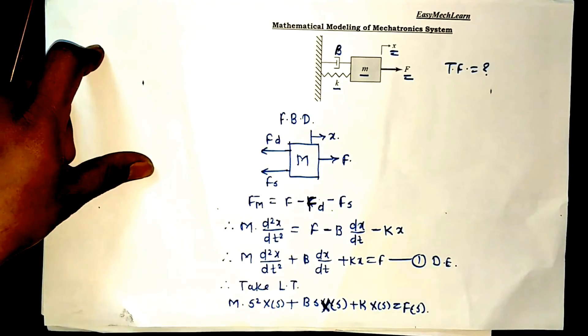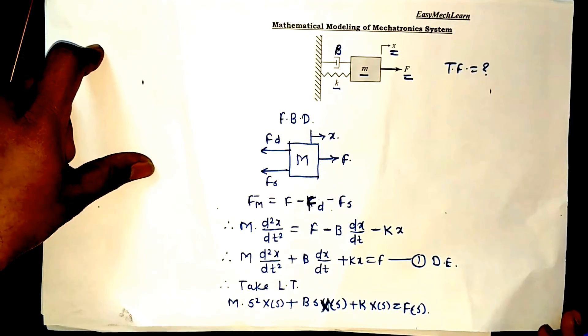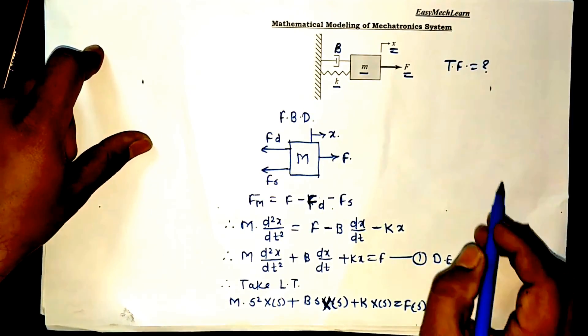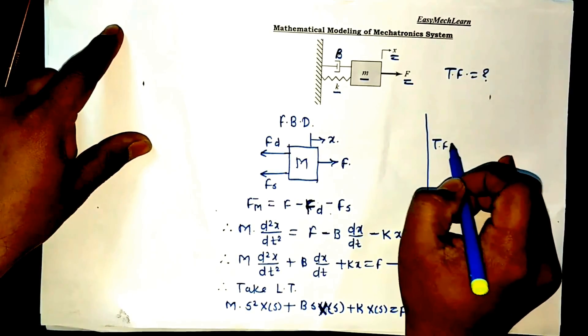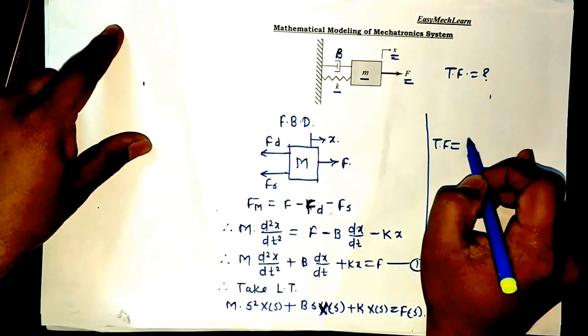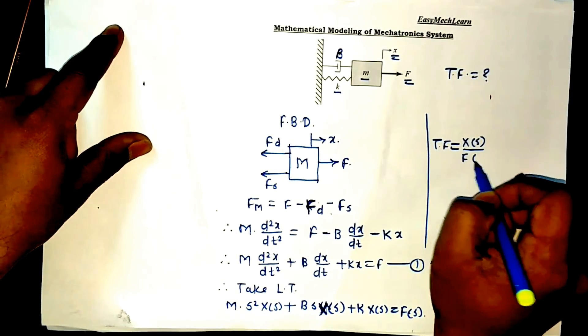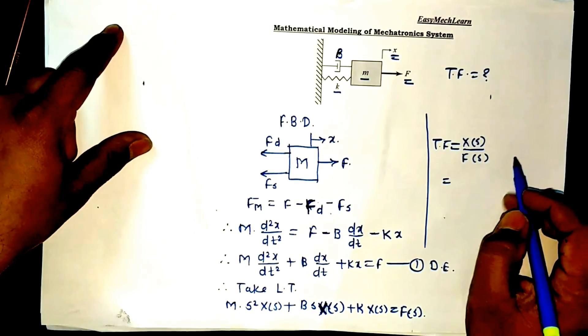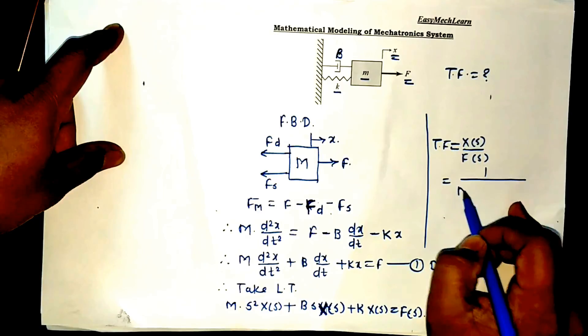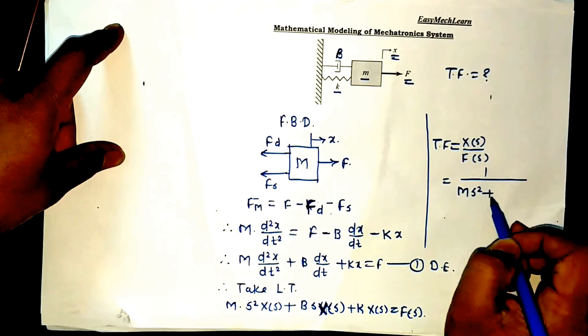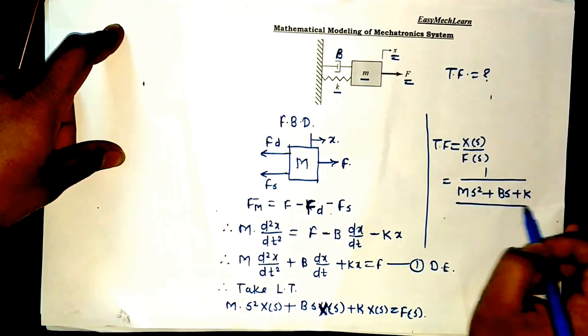Now, if you simplify this equation, this is the transfer function. Transfer function is equal to X of s upon F of s. That is Laplace of output divided by Laplace of input: 1 upon Ms square plus Bs plus K. This is the transfer function for a given mechanical system for a translational motion.